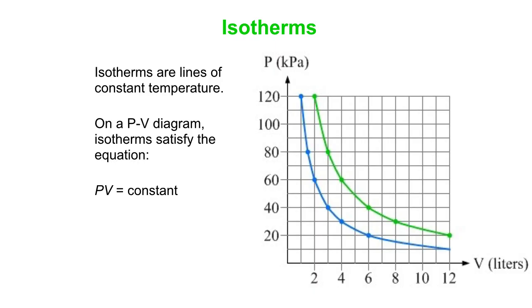And what happens here is that the green line, you can see if you go to the top point, for instance, it's got a pressure of 120 kilopascals and a volume of 2 liters, whereas the blue point is 120 kilopascals, 1 liter. So that means P times V for the green line is twice as big as P times V for all points on the blue line.